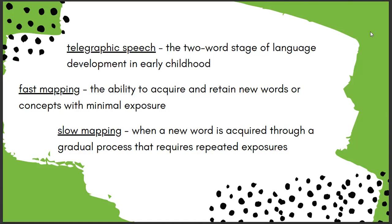Children go through periods of fast mapping and slow mapping. Fast mapping is the ability to acquire and retain new words or concepts with minimal exposure. Slow mapping occurs when a new word is acquired through a gradual process that requires repeated exposures. Kids always seem to fast-map things you don't want them repeating — you say a bad word once and months later they're still saying it. That's fast mapping: they hear it one time and retain it, saying it over and over again.